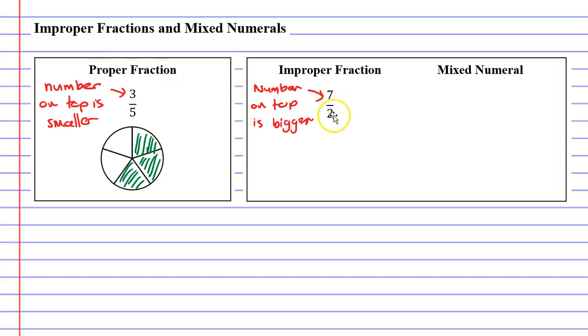So if we look at our improper fraction, you will notice it has a numerator of 7 and a denominator of 2. The denominator tells us that we need to cut our circle into two pieces. Here is my circle here.